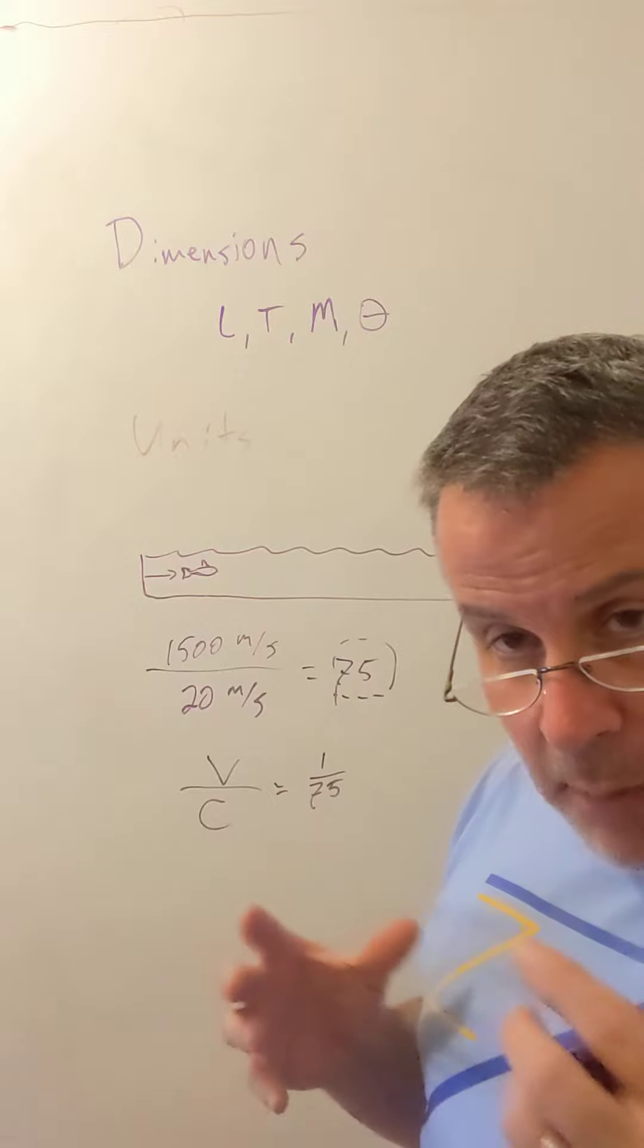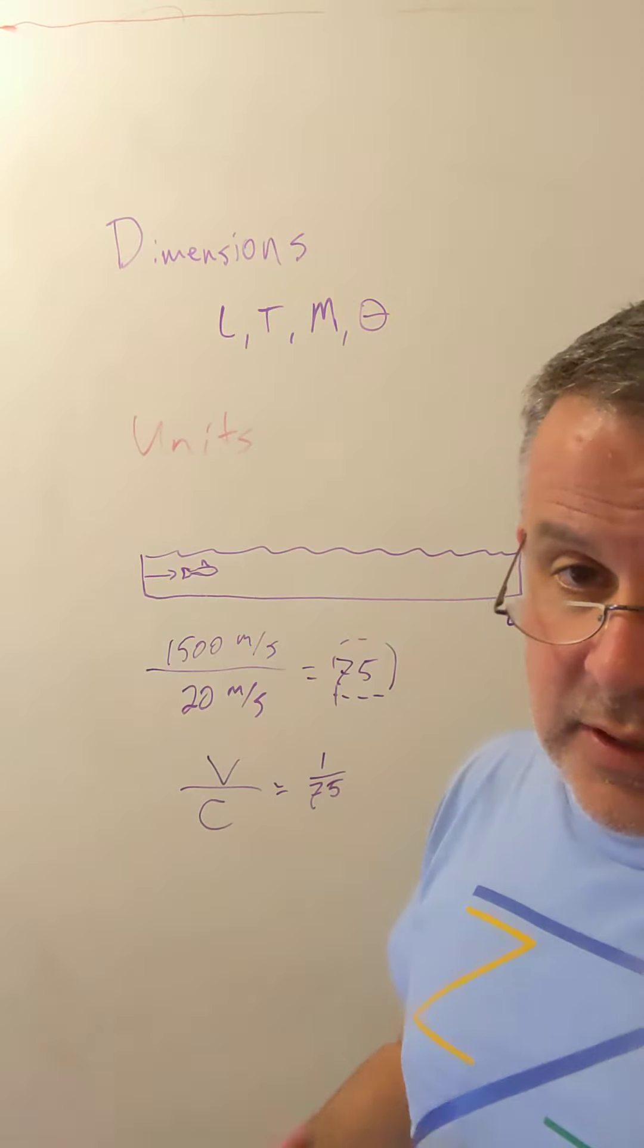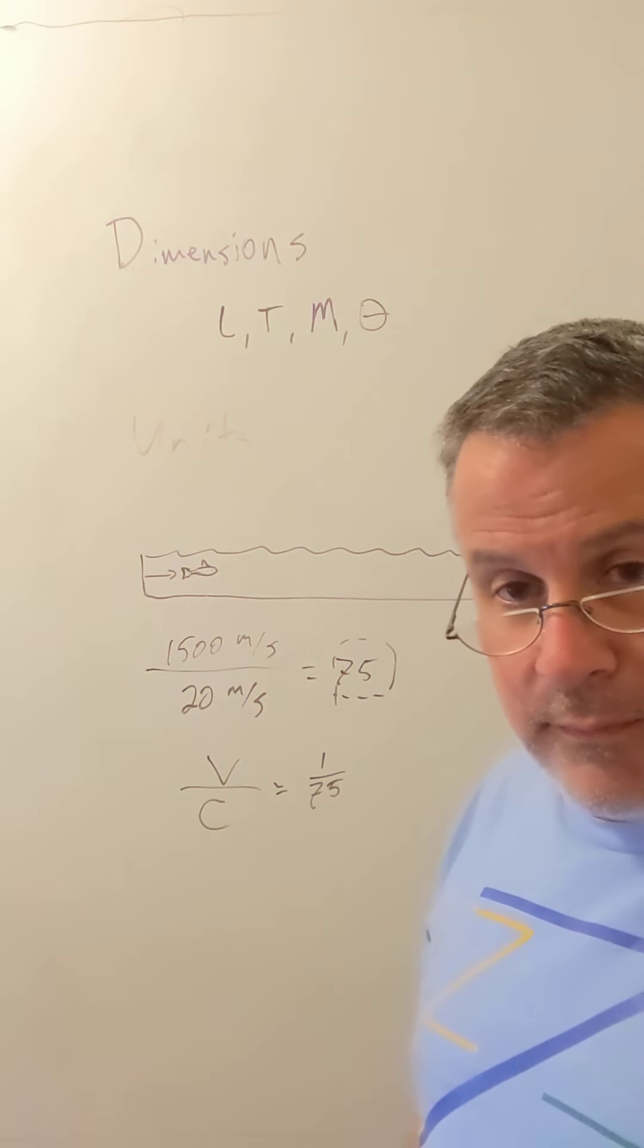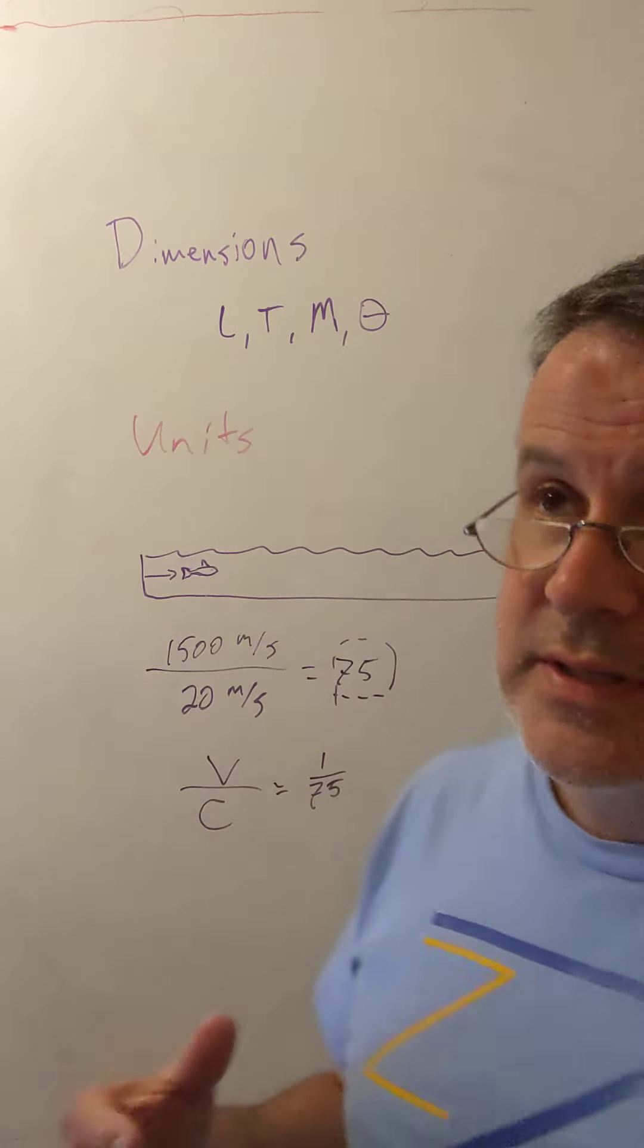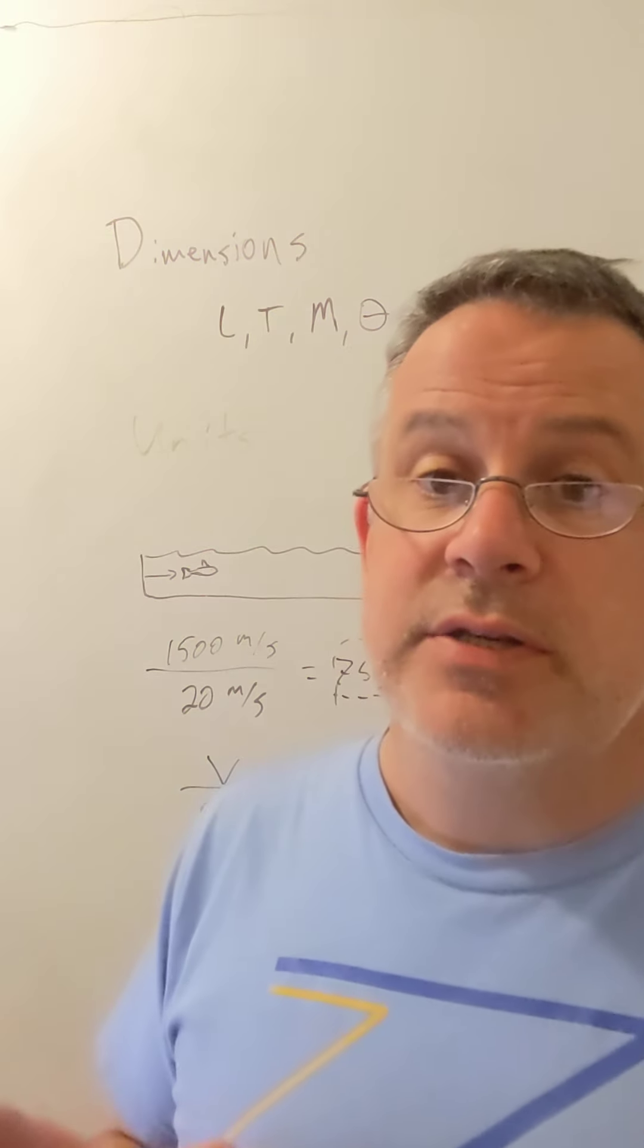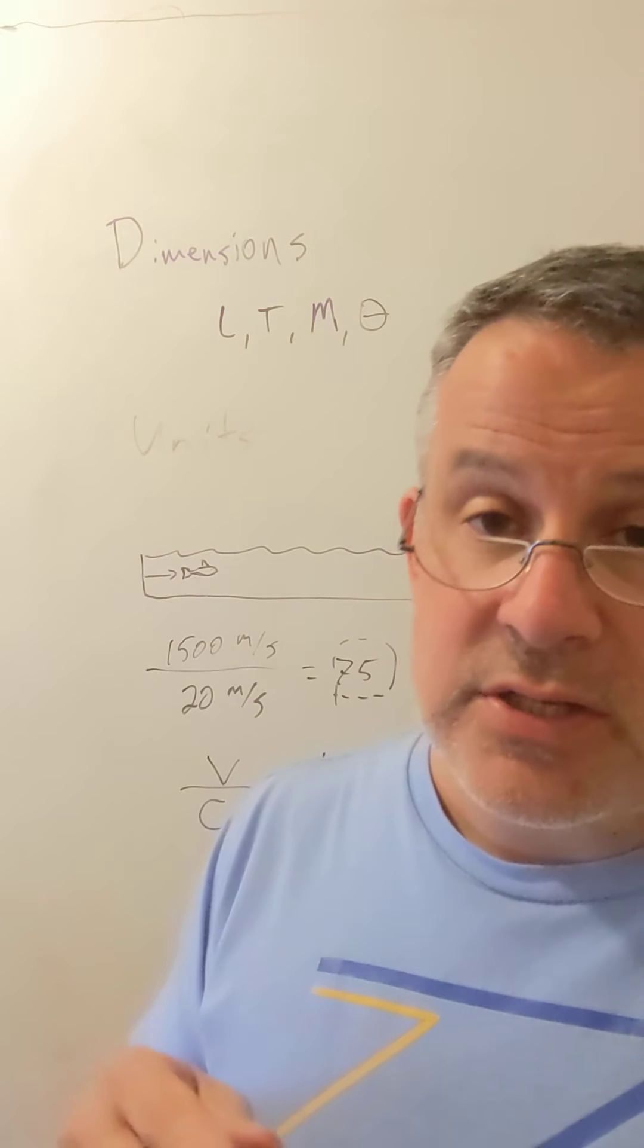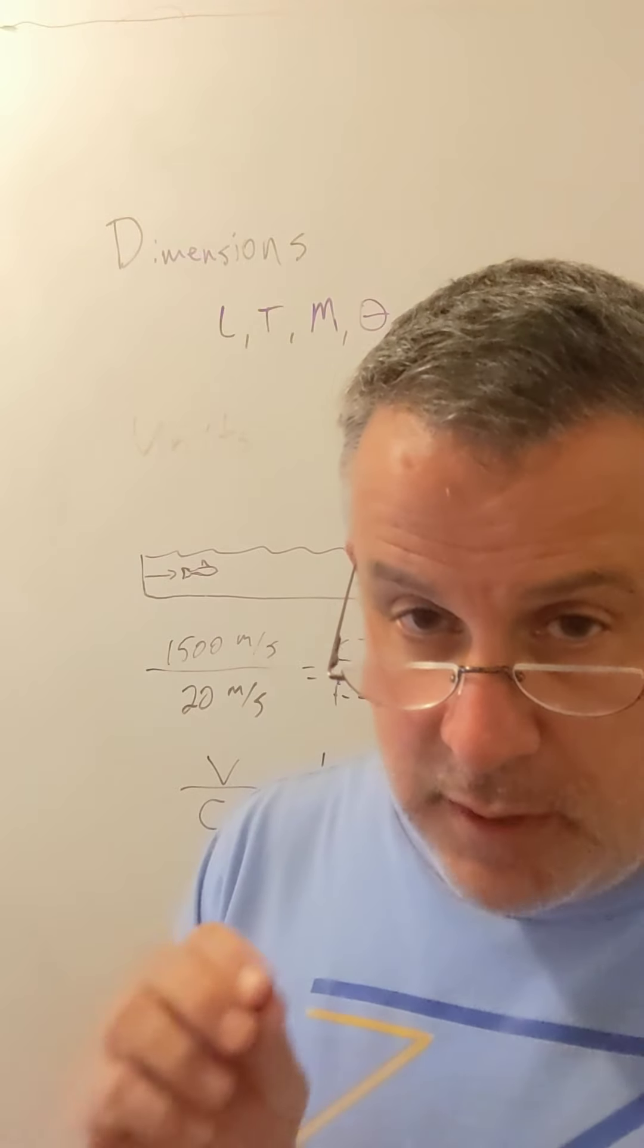It goes beyond the particular units and even the dimensions of the properties that you're measuring because it is a dimensionless thing. So when we go to study physical theories, we're going to pay a lot of attention to dimensionless ratios that arise naturally. The next short video is going to talk about how we extract dimensionless ratios from a set of equations.